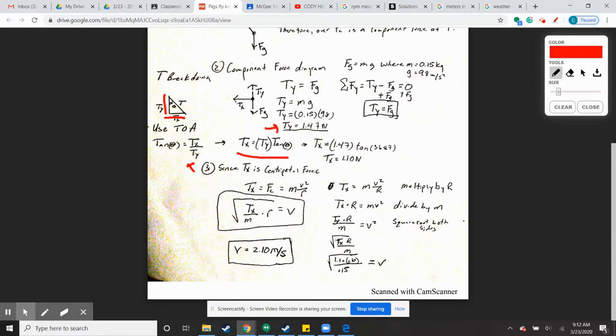So Tx equals Ty times tangent of theta. We know that Ty, we solved for that up here, and the angle is 36.87.